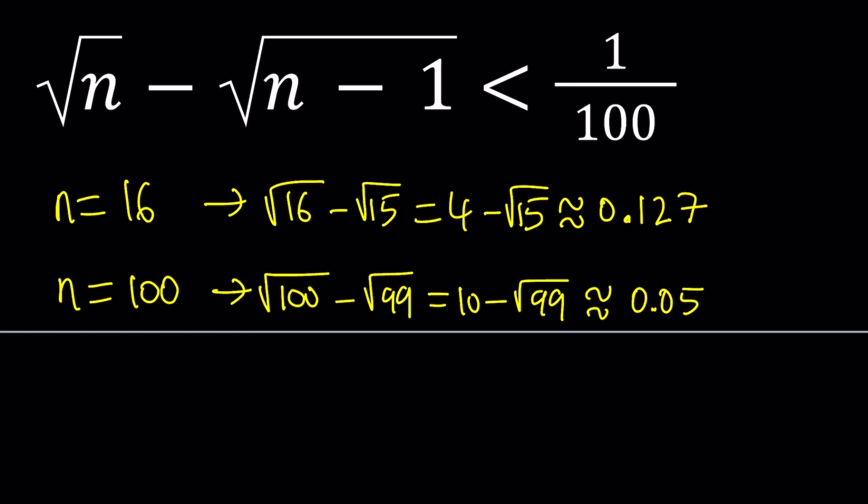So now what happens if n is equal to 1 million or 10 to the power 6? Then you get something like this: 10 to the power 6, the square root of that, minus the square root of 10 to the power 6 minus 1, which is 999,999. And this difference is actually going to be very close to 0.0005. This is way too small. It's not actually like way too small, but it's kind of way too small.